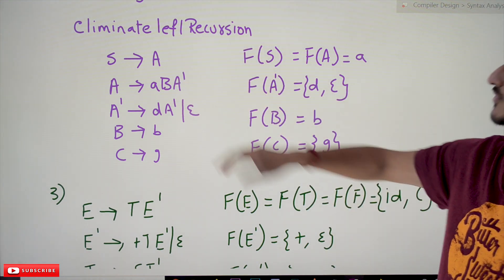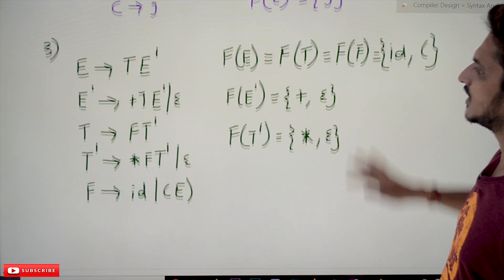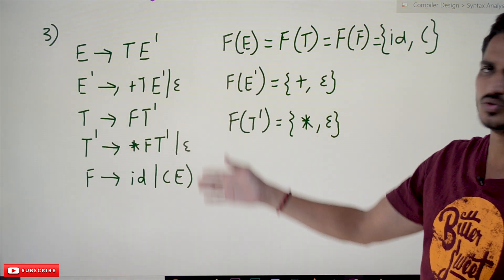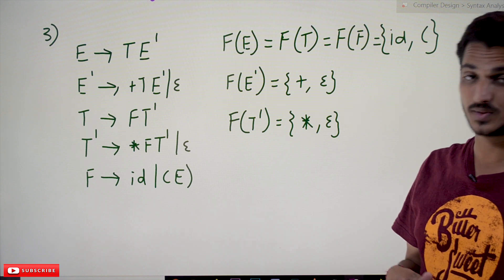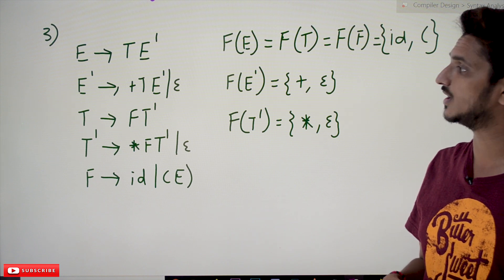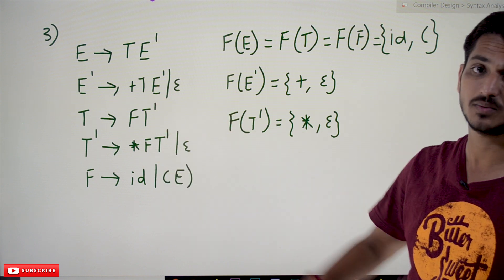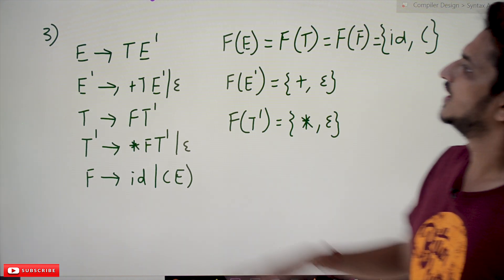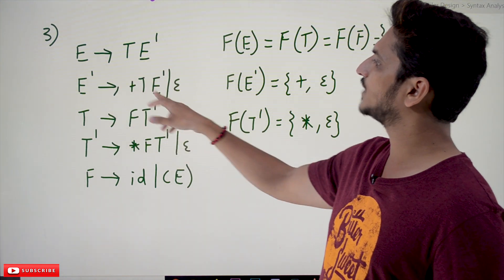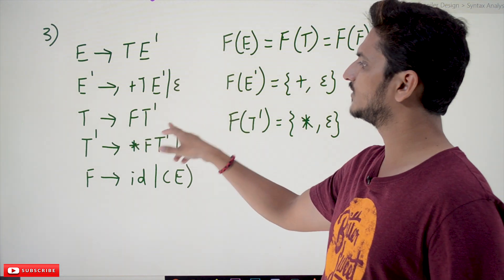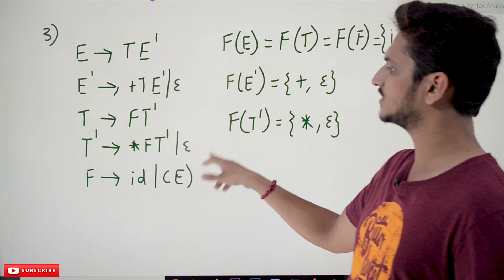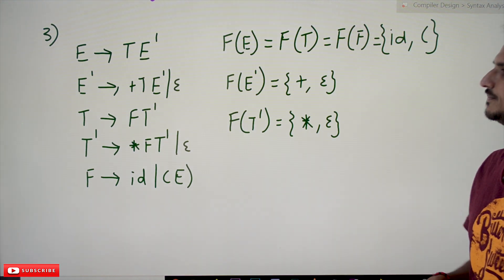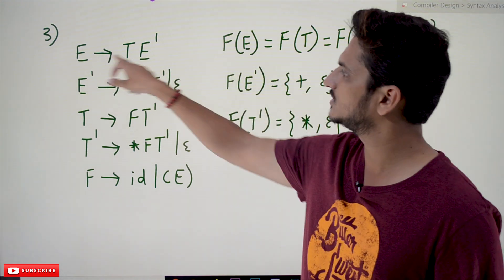Now coming to the next one: E tends to T E', which is the grammar used to identify expressions in previous classes based on plus and star symbols, following precedence and associativity. E tends to T E', E' tends to plus T E' or epsilon, T tends to F T', T' tends to star F T' or epsilon, F tends to ID or open bracket E.